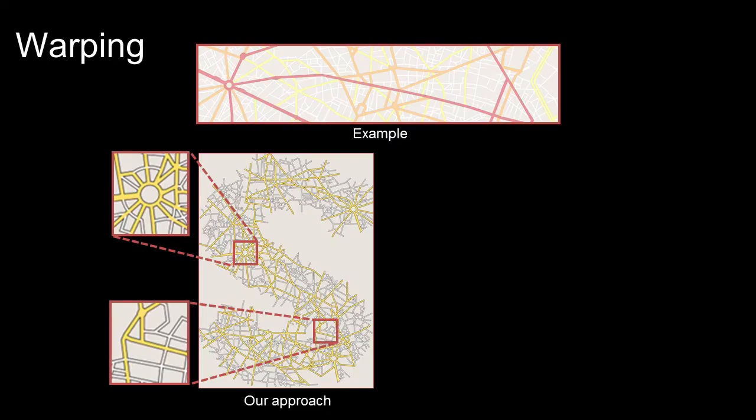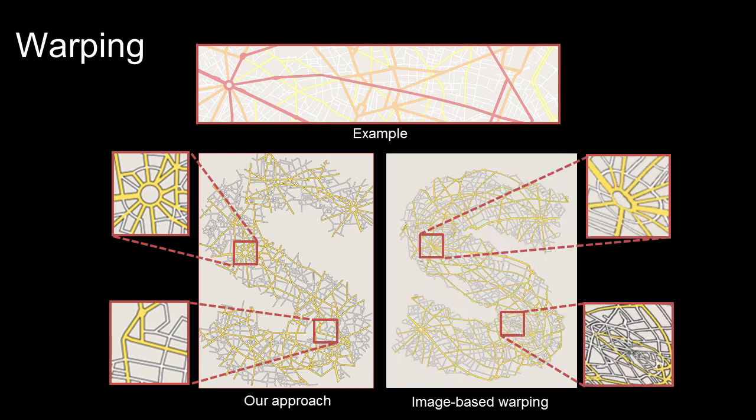In this next example, the user controls growing by using our warping operation. While an image-based warping might distort or collapse local shapes, our approach preserves them despite the global deformation.